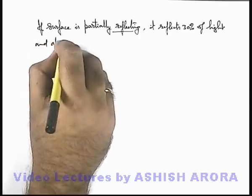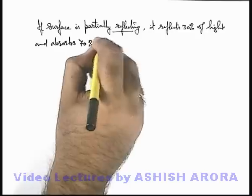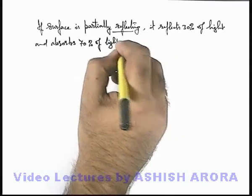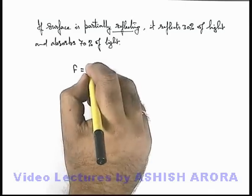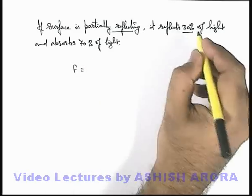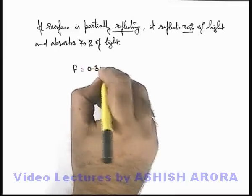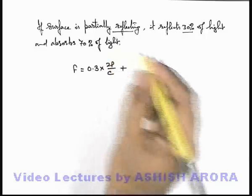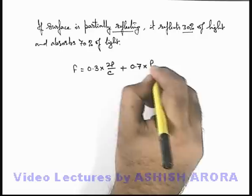And absorbs 70 percent of light incident on it. Then in this situation we can say the value of force exerted can be given as: it is 30 percent light reflected, so 30 percent means 0.3 × 2P/c, plus 70 percent is absorbed, so it can be written as 0.7 × P/c.